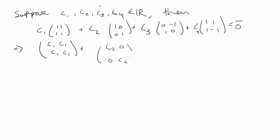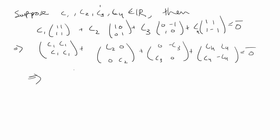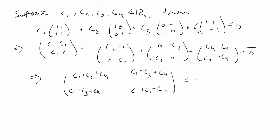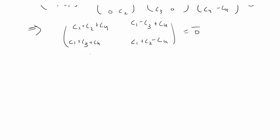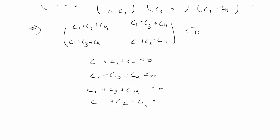Expanding by matrix properties, we get entries: C₁+C₂+C₄, C₁−C₃+C₄, C₁+C₃+C₄, and C₁+C₂−C₄ all equal to zero. We can rewrite this as a linear system of equations: C₁+C₂+C₄=0, C₁−C₃+C₄=0, C₁+C₃+C₄=0, and C₁+C₂−C₄=0.